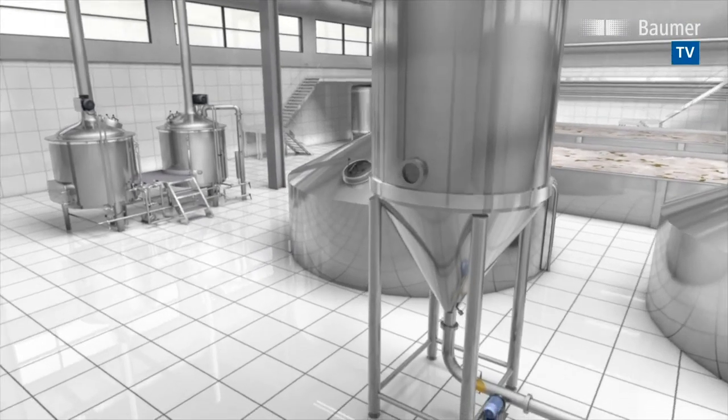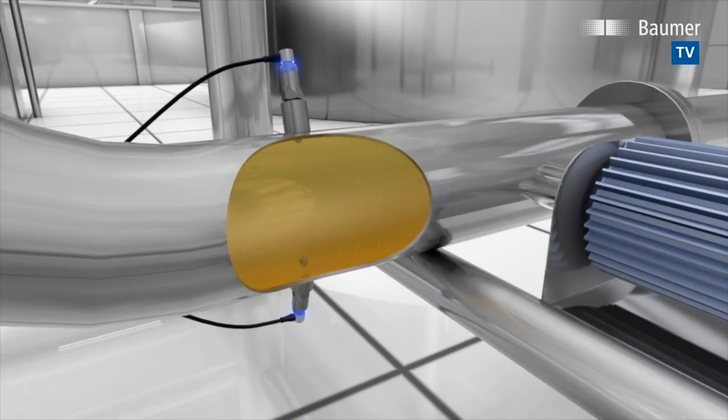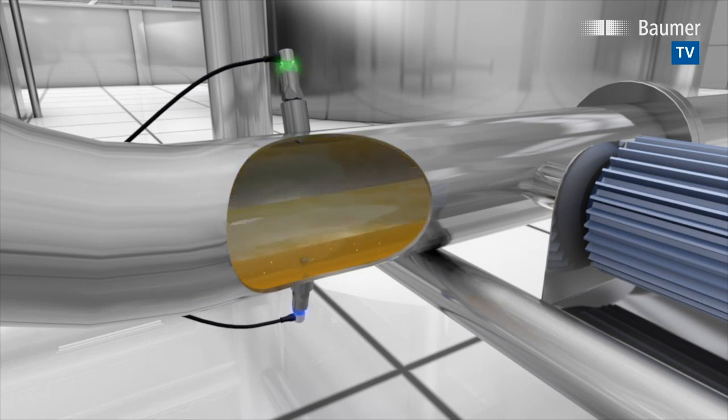In breweries, Clever Level switches are deployed for empty pipe monitoring. Installed at the pipe's top end, Clever Level will trigger a switching output as soon as the fluid no longer fills the pipe completely.